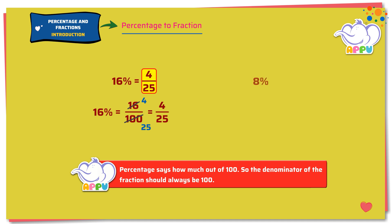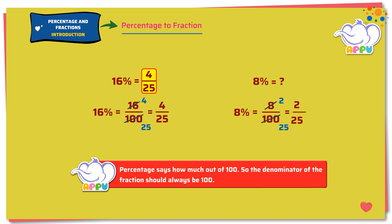Express 8% as a fraction. 8% means 8 out of 100, which we write as 8 by 100. Let's simplify: 4 divides 8 two times, and 4 divides 100 twenty-five times. So 8% equals 2 by 25.